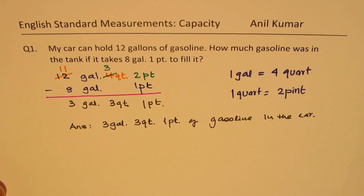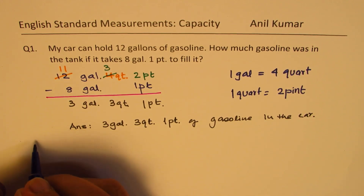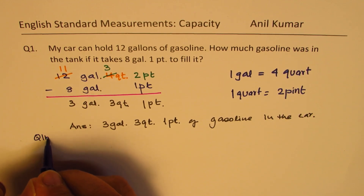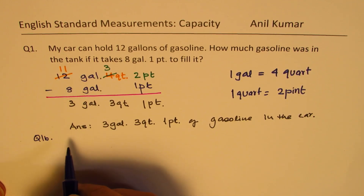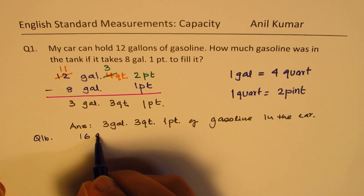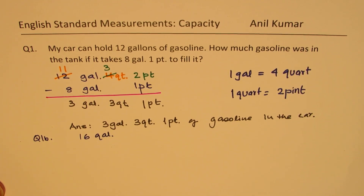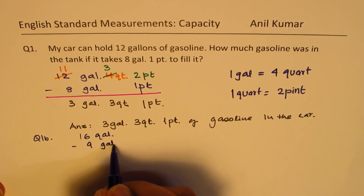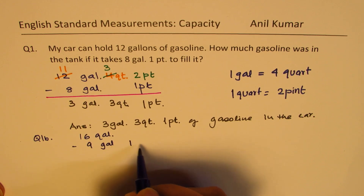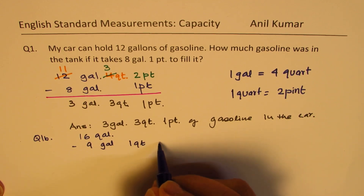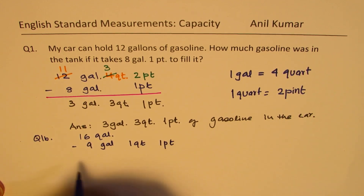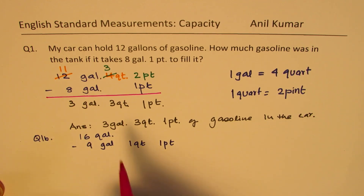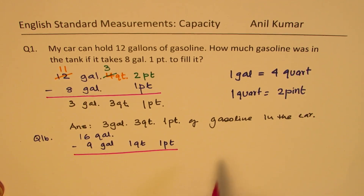Here is a practice question for you — question 1b. We have 16 gallons of gas, and you want to take away nine gallons, one quart, and one pint. So this is a practice question for you; you can solve this and write down your answer.